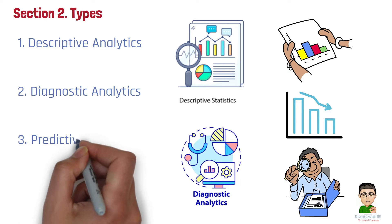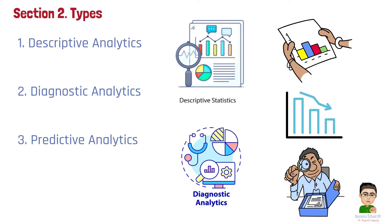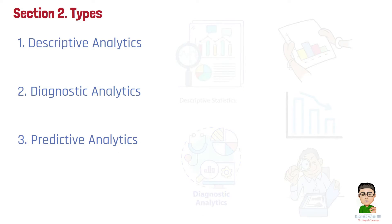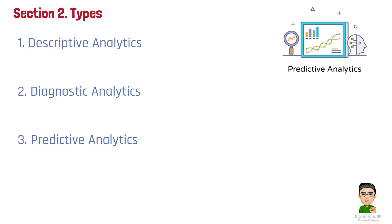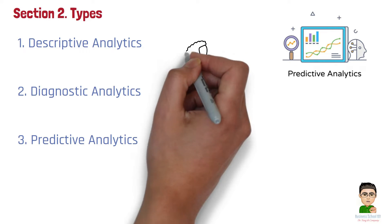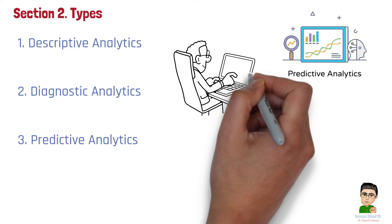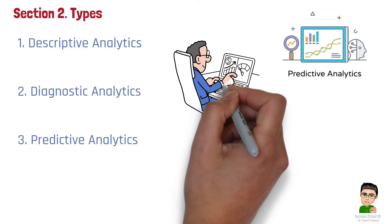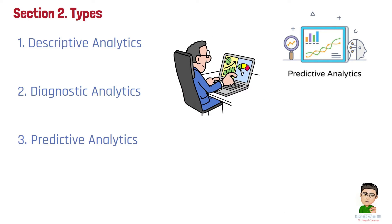Type 3: Predictive analytics. This type of analytics uses historical data and statistical models to predict future outcomes. It answers the question 'what is likely to happen?' For example, an e-commerce company might use predictive analytics to forecast future sales based on historical data, seasonal trends, and consumer behavior patterns.